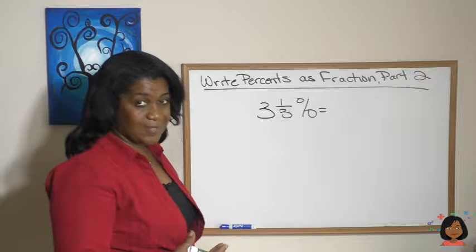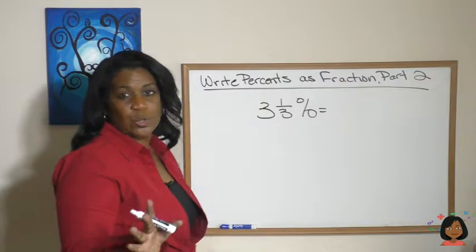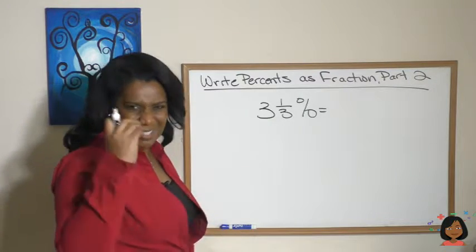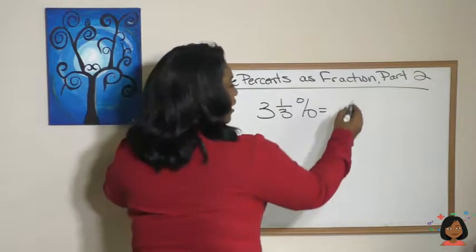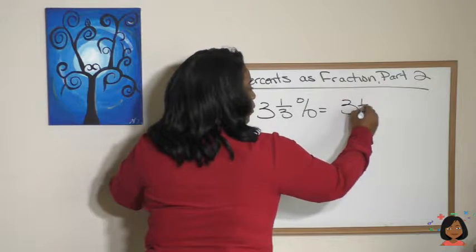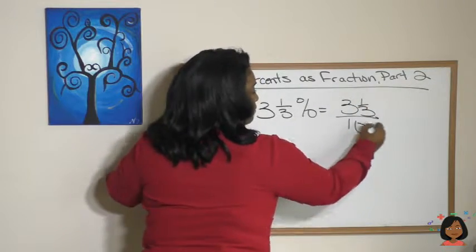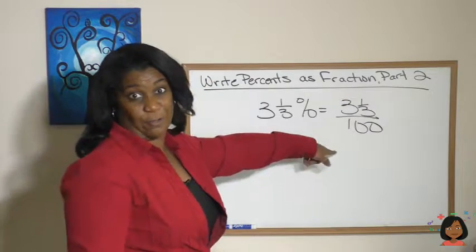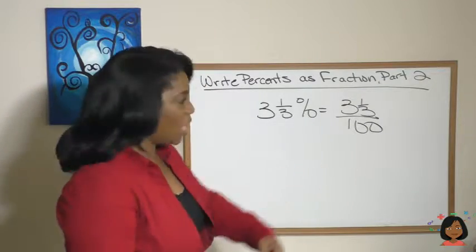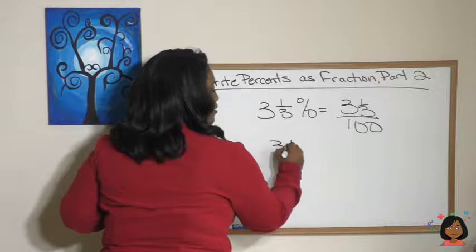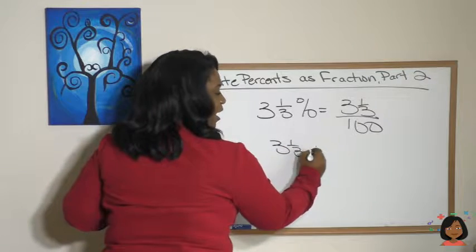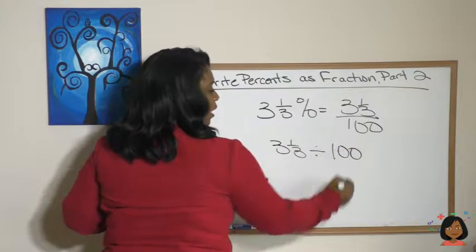Let's try another one. Let's try it with 3 and 1/3 percent. You can get this process down, you can do this for any percent because the process is always the same. We take it, we drop the percent and we put it over 100. But that makes most of you guys freak out, right? Okay, so write it the long way: 3 and 1/3 divided by 100.